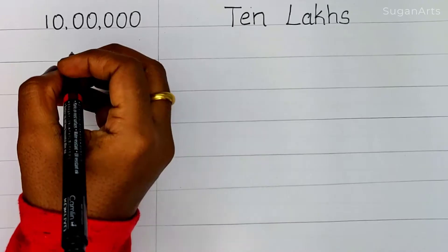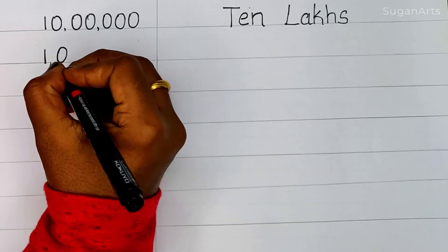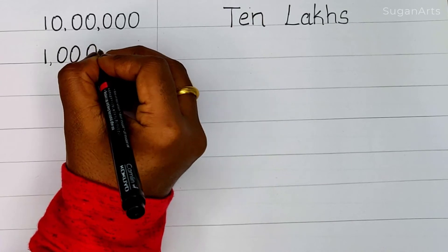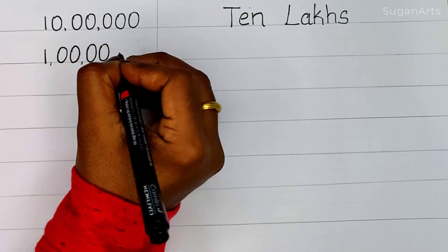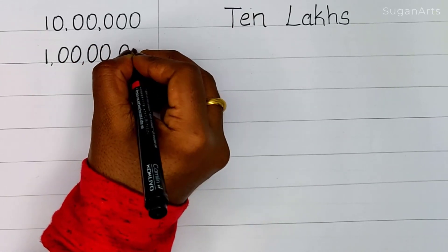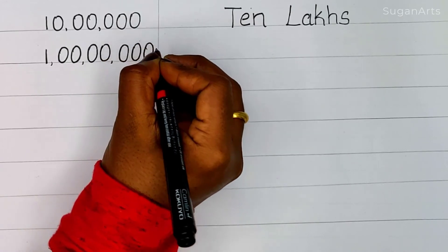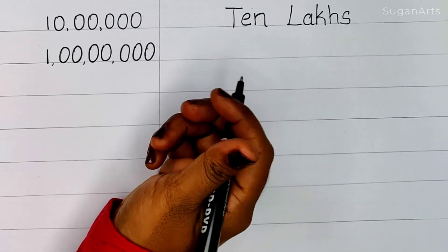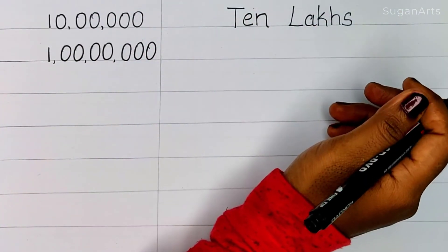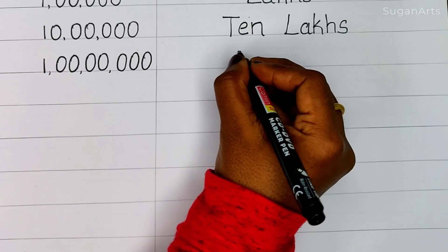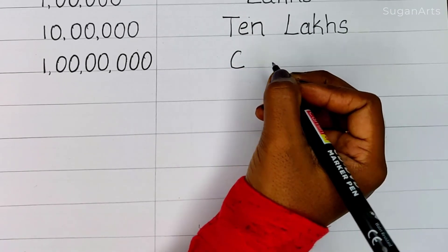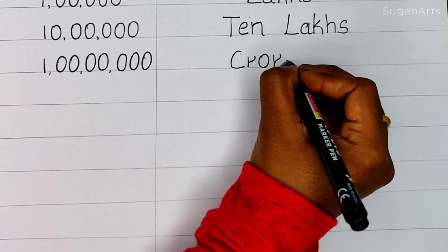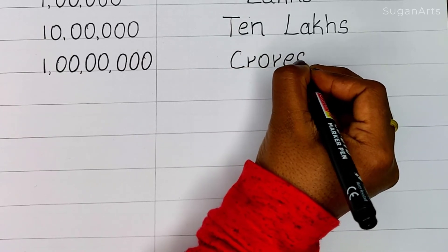So next, 1 0 0 0 0 0 0 0 — that is 7 zeros. In the Indian system we call it as Crore. C-R-O-R-E-S. Crore.